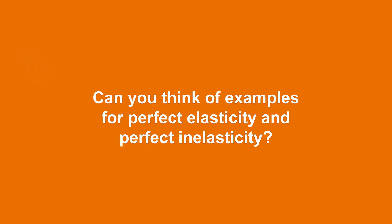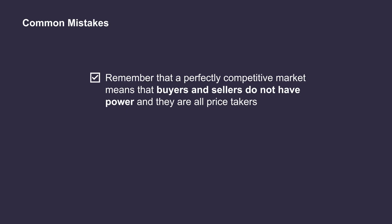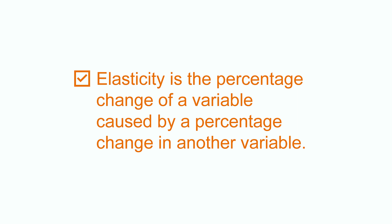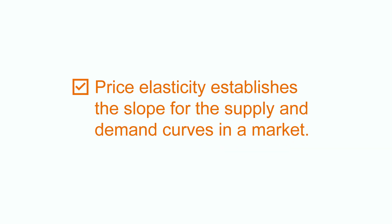Can you think of examples for perfect elasticity and perfect inelasticity? Which are the most common mistakes? First of all, remember that a perfectly competitive market means that buyers and sellers do not have power and they are all price takers. Also, elasticity is measured as a percentage change because we are measuring things that have different units. Wrapping up, we have seen in this video that elasticity is the percentage change of a variable caused by a percentage change in another variable. The most used indicator is the price elasticity, which establishes a slope for the supply and demand curves in the market.